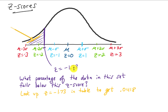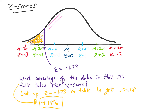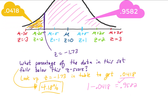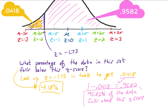We typically call that the area under this curve. The total area under this normal distribution is 1, and 0.0418 of that is in this region to the left of our z-score. So 4.18% of the data falls below this z-score. To find the percentage above that z-score, we subtract 0.0418 from the total area of 1 to get 0.9582 — meaning 95.82% of our data falls above the given z-score. This makes sense because 4.18% and 95.82% should add up to 100% of the data, and they do.